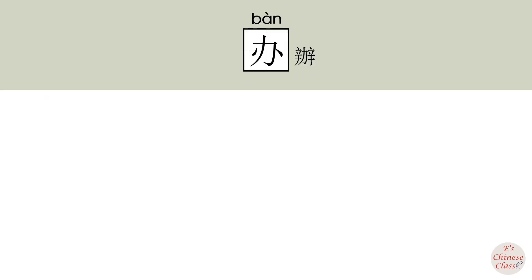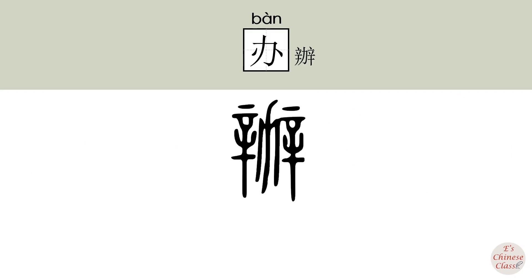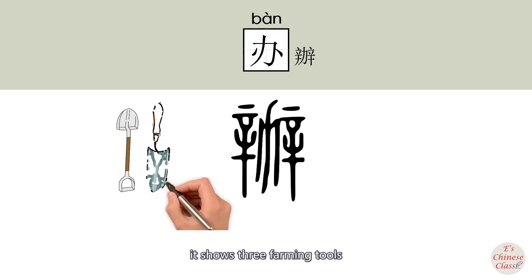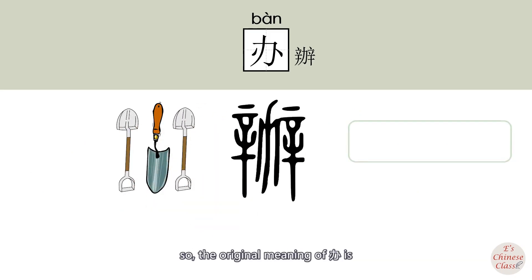In ancient Chinese, 办 was written in a form that shows three farming tools. So the original meaning of 办 is: do, handle,